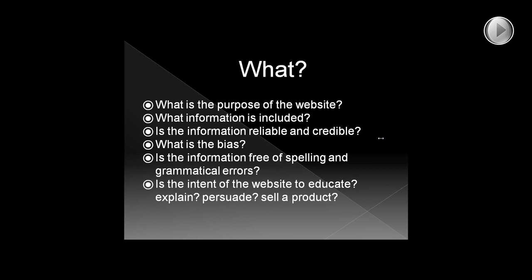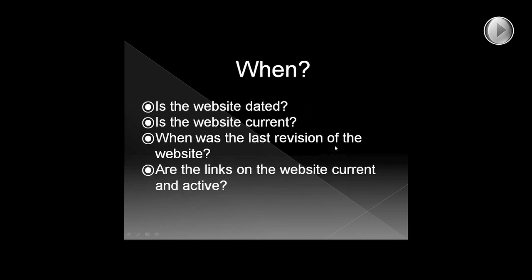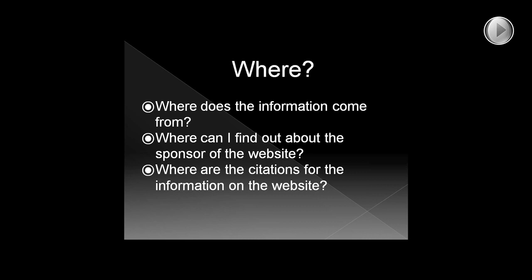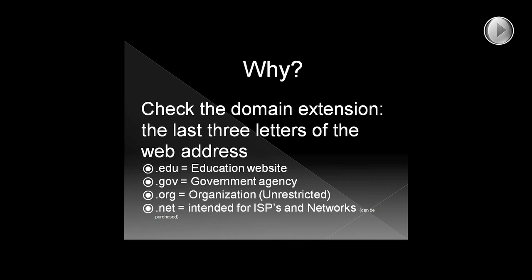When was the website created? Is it current? Is there a date for it? When was it revised? And it's very important to check out those links — are they current and active? Where does the information come from? That circles back to who. Finding that sponsor and then finding those citations for information on the website. And then why — why is it created? Sometimes you can find that information by looking at the domain extension, those last letters of the web address.